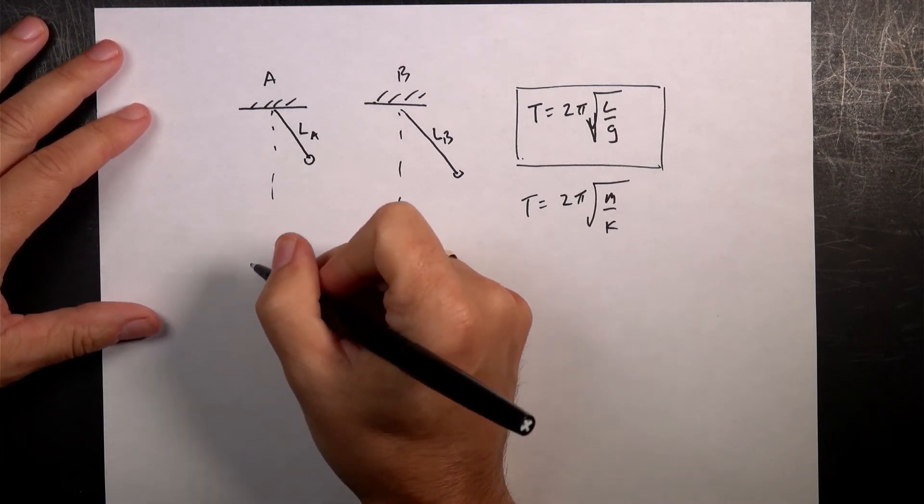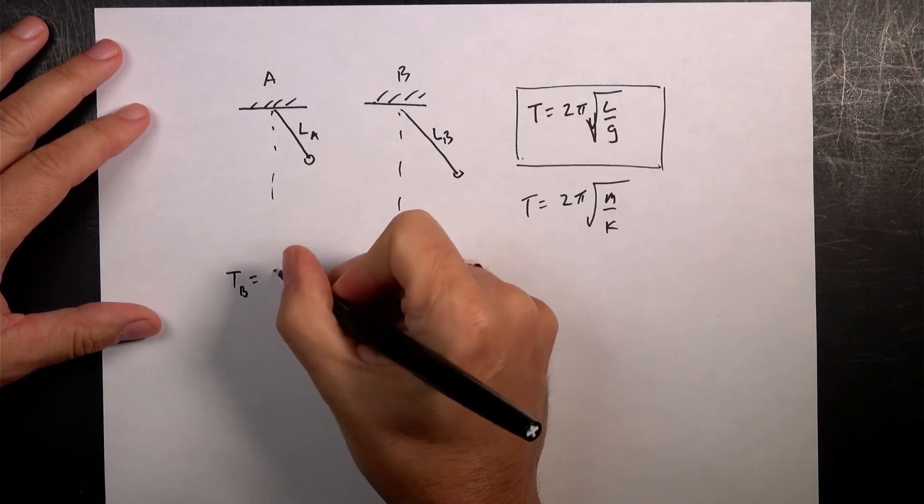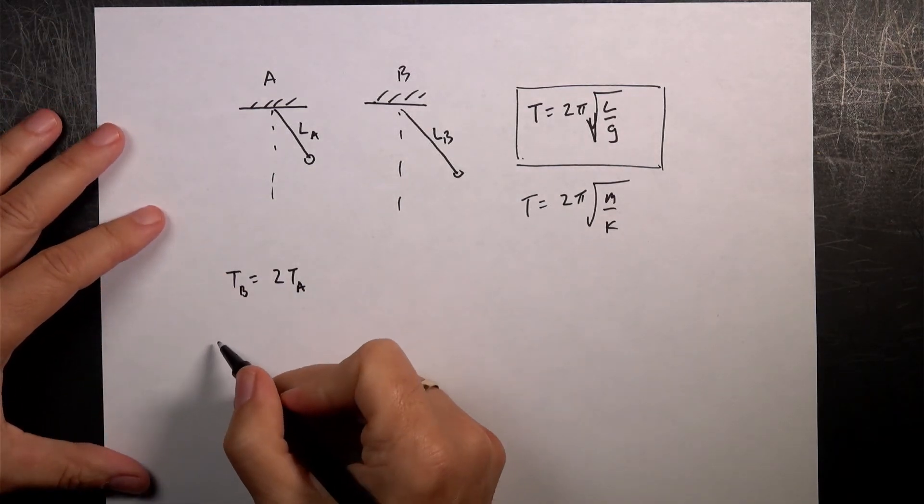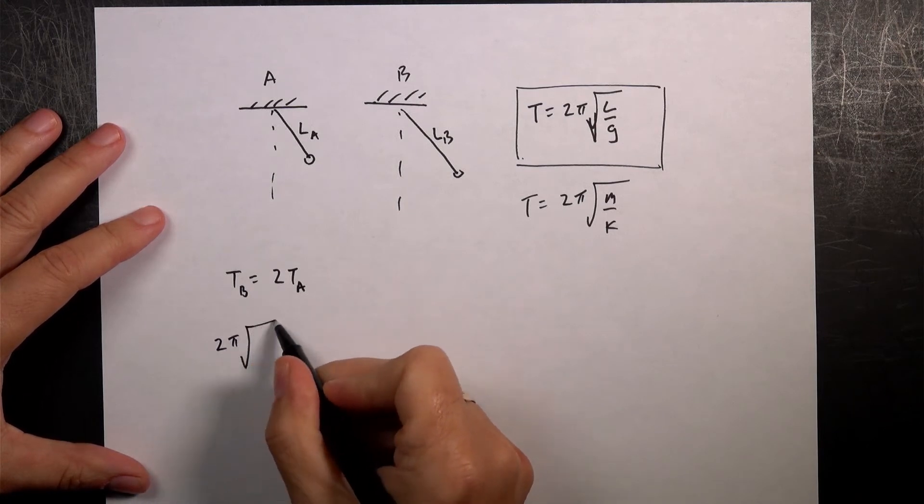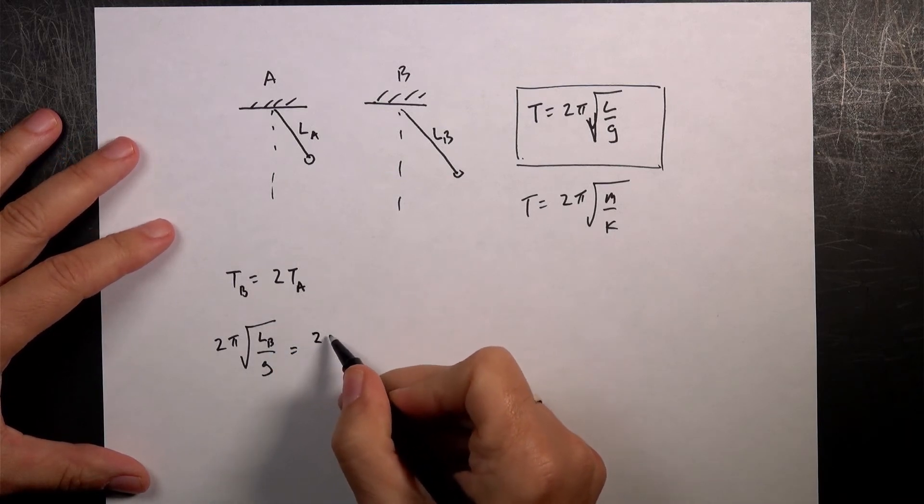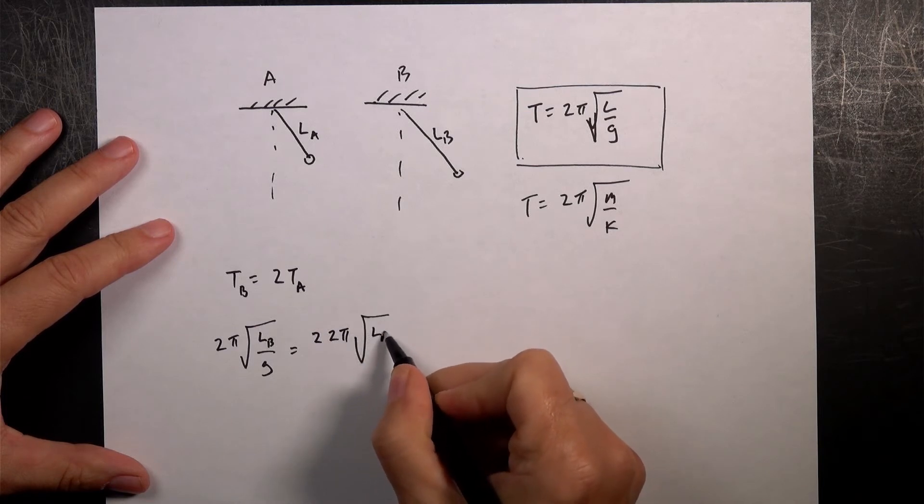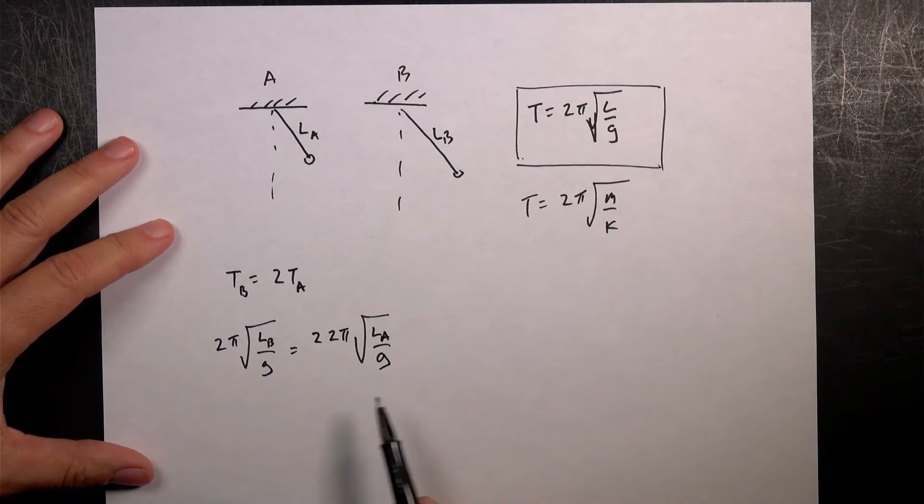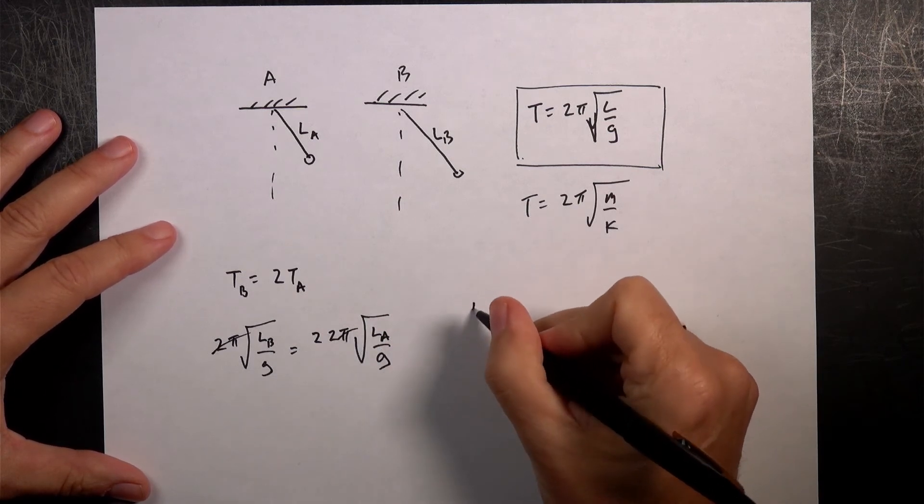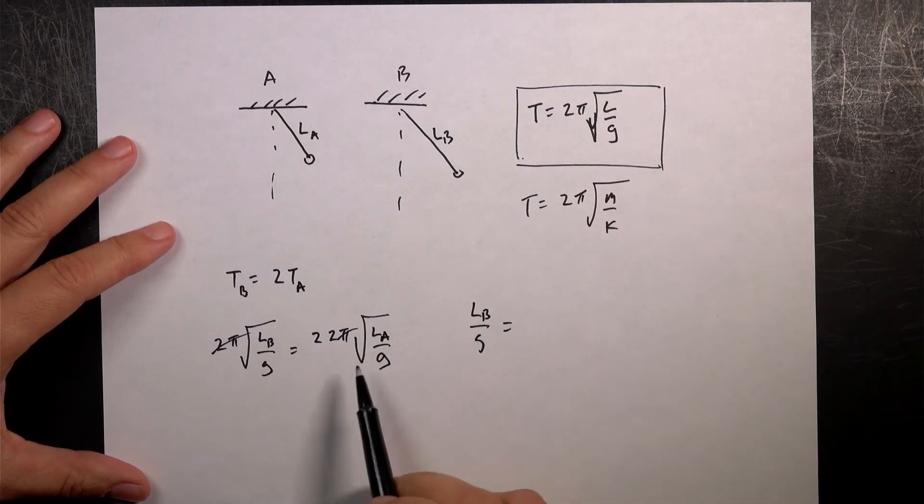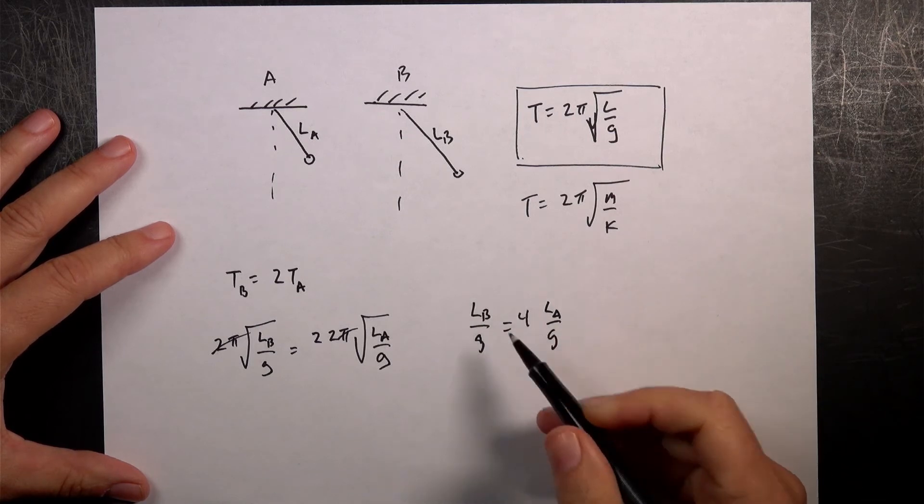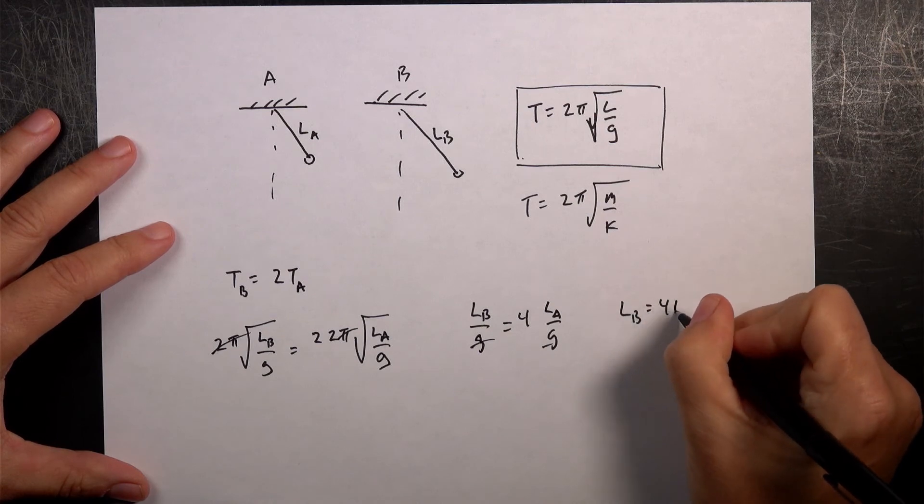We know that the period of pendulum B, TB equals twice TA, 2TA. And so they want to know something about the lengths. So TB is going to be equal to 2π square root of LB over g, and that's going to equal twice of A. So it's going to be 2 times 2π square root of LA over g. Now we want to get an expression for LB. So I'm going to divide both sides by 2π. I'm going to square both sides. So now I have LB over g equals, if I square this, I have a 2 there that squares, 4LA over g. Now I can multiply both sides by g, and I get LB equals 4LA.